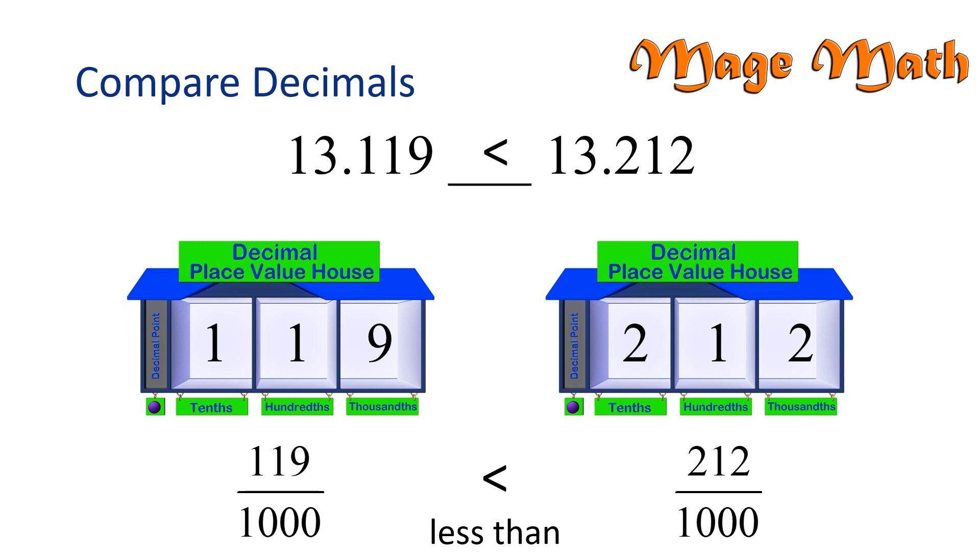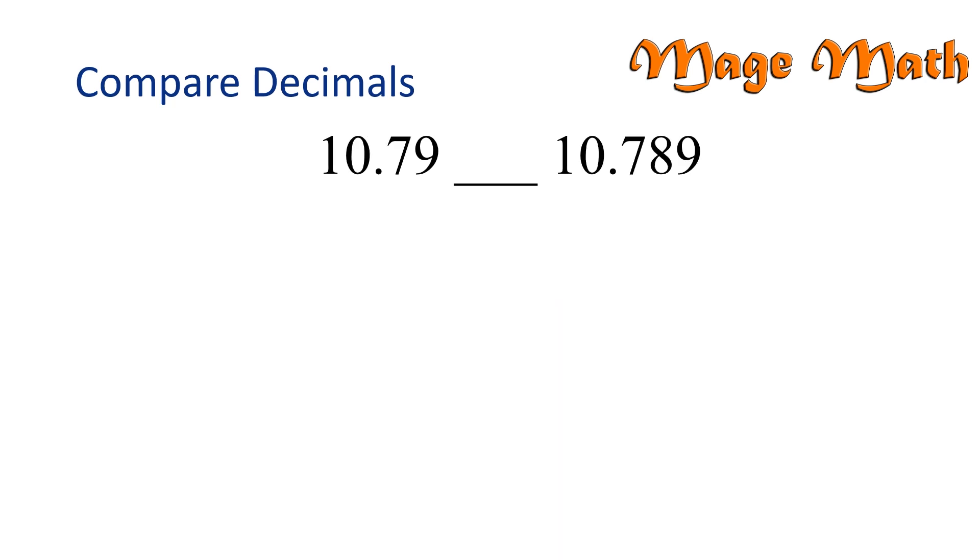Let's try another problem. Compare the decimals 10 and 79 hundredths to 10 and 789 thousandths. We're going to be using the greater than, less than, or equal to signs. Notice how both numbers have the same whole number parts, 10. When these numbers are the same, we only need to focus on the decimal parts.